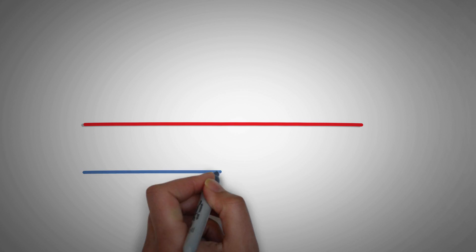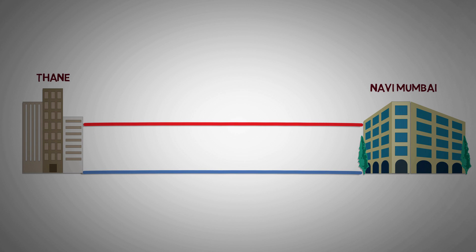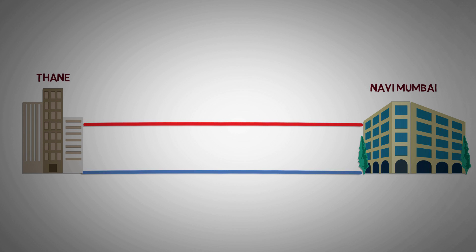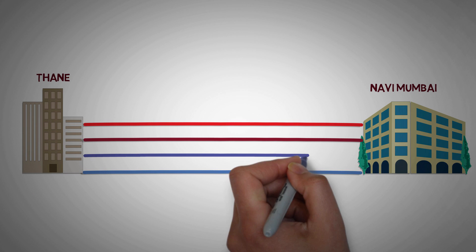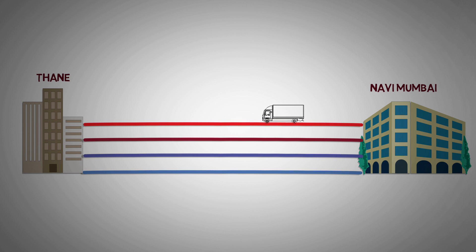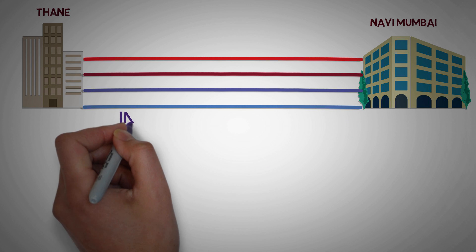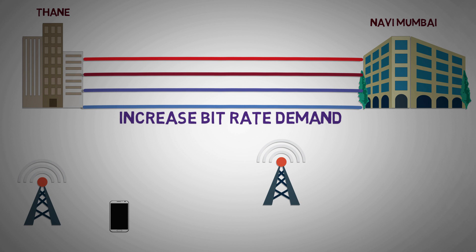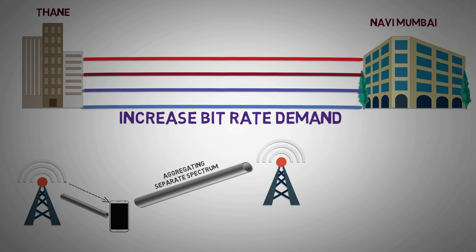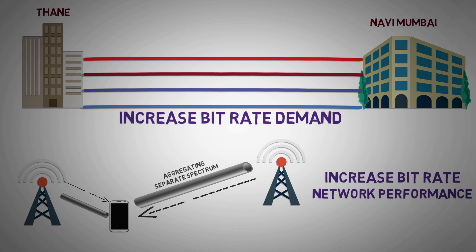Imagine a road connecting two places. As the number of people traveling increases, what do we do to serve the increased traffic? We add more lanes or construct flyovers. Similarly, in LTE, carrier aggregation is used to serve increasing bit rate demand.